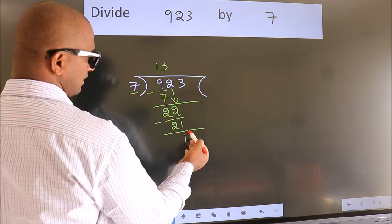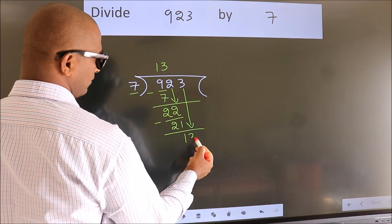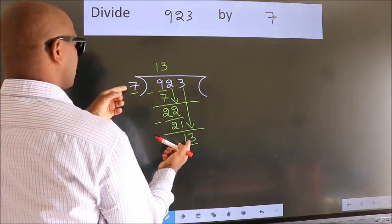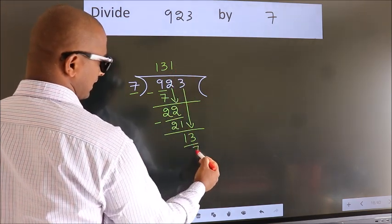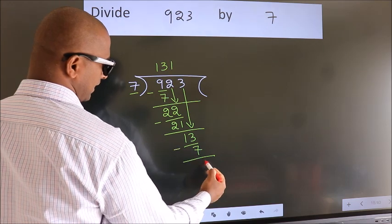After this, bring down the beside number. 3 down, so 13. A number close to 13 in the 7 table is 7 once 7. Now we subtract. We get 6.